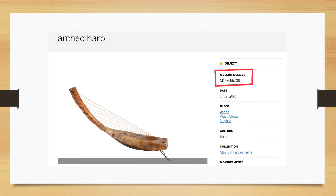Each object will have its own accession number — in other words, a code specifically used to locate that object in the database. Once we find that object in the database, we can learn more information about it, like where it's from, its purpose and use, and when it was collected. Later on, I will show you how to explore the Horniman's online collections for museum objects.